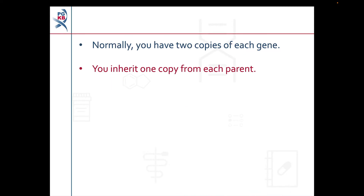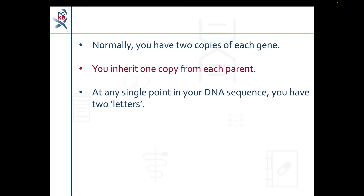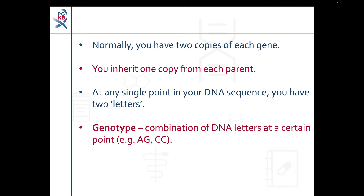Normally you have two copies of every gene, as you inherit one copy from each parent, though there are exceptions to this. At any single point in the DNA sequence of a gene you actually have two letters, one from each copy of the gene. In genetics we use the term genotype to refer to this combination of letters. For example, you may have an A and a G at a particular point in your DNA sequence, and two Cs at another point.